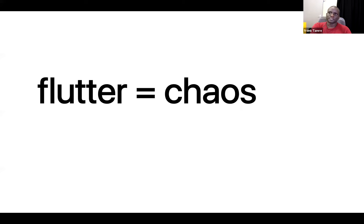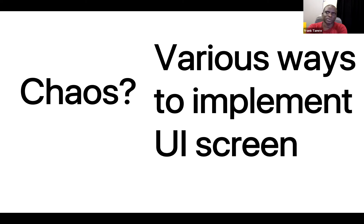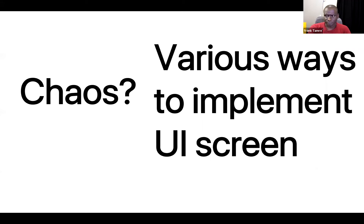There are various ways of implementing a UI screen and the chaos starts to pop up. From the code reviews, the battle between developers and designers, one thing you start to realize is that there's a lot of chaos - but we shouldn't be having chaos inside our teams. So how do we get rid of this? One of the ways - and I'm not saying this is the only way - is using a design system.